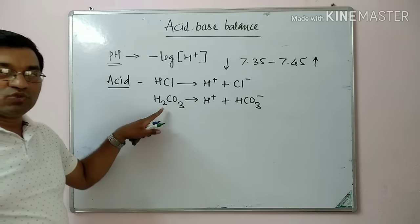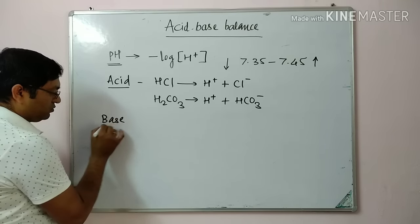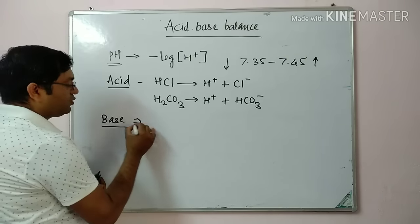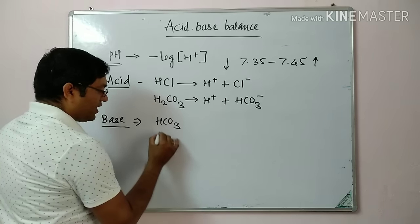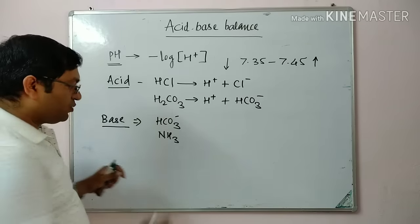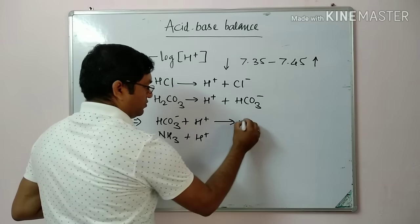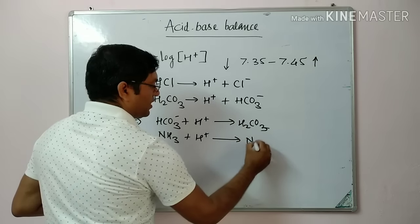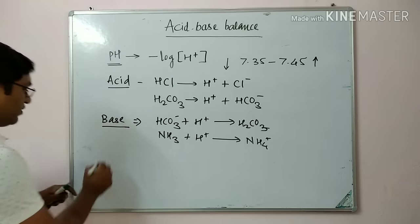Acids donate protons; bases accept protons. Examples of bases are bicarbonate and ammonia. They accept protons and are converted into carbonic acid and ammonium ions respectively. That is why they are known as bases.